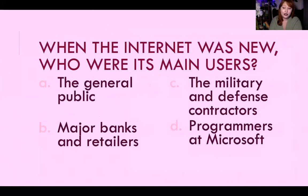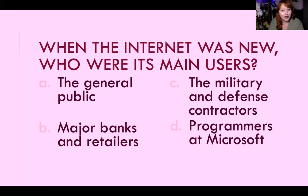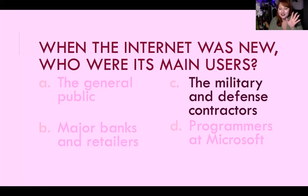When the internet was new, who were its main users? The general public was not allowed to access the internet — that wasn't a thing for them until the 90s. Major banks and retailers wouldn't have been involved either because it wasn't encrypted and it wouldn't have been useful for financial things. Microsoft didn't exist yet. So the answer is military and defense contractors — the military is generally the first to use new technology because they have the budget to invest in research.